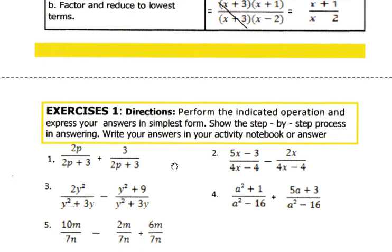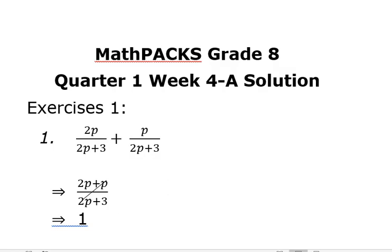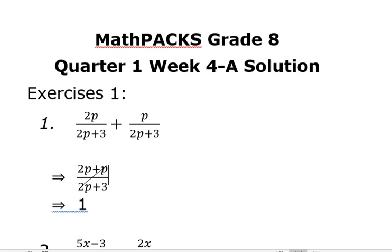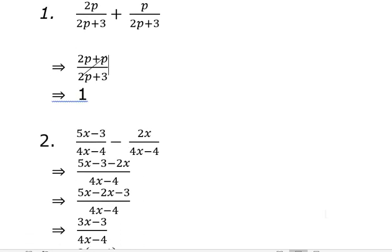Let's get started with number 1. We have here 2p all over 2p plus 3 plus 3 all over 2p plus 3. So, we have similar rational algebraic expressions. We have to combine 2p plus 3 all over the common denominator 2p plus 3. And we know for a fact that the numerator and denominator are the same. So, the answer is 1.